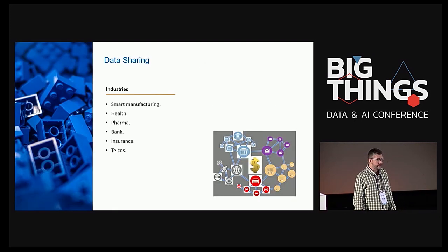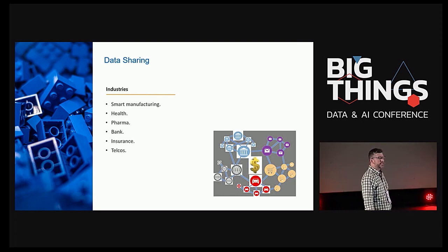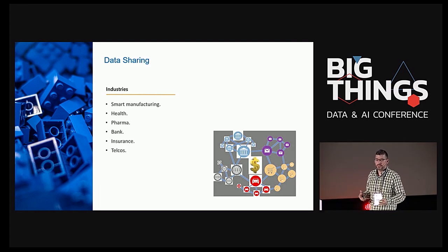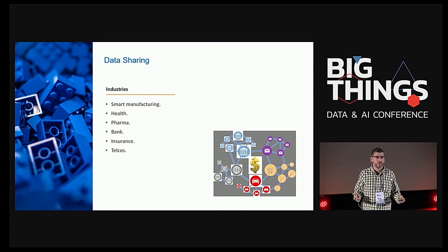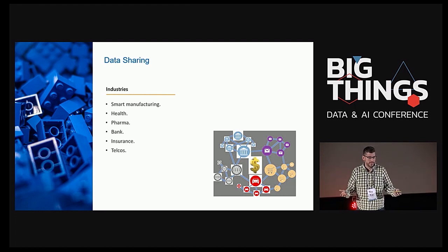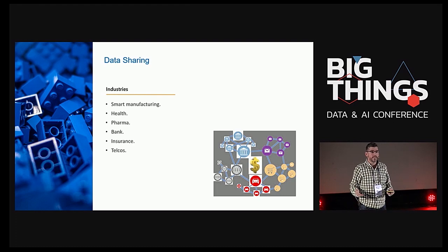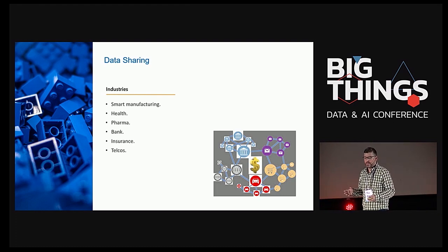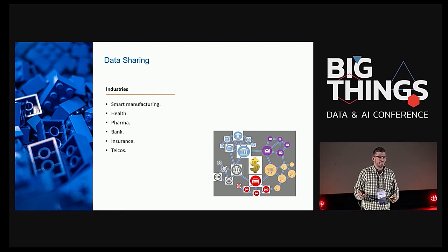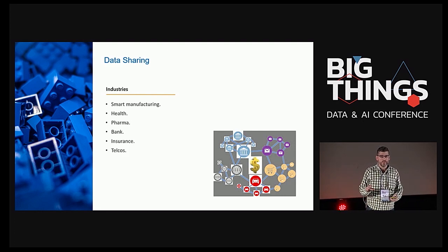This can be applied to many different industries. For example, in the healthcare sector, if we combine the medical records of different hospitals, we can obtain better accuracy in predictive models to detect diseases. Another example is manufacturing: imagine I produce robotic arms and sell them to different manufacturing companies. If I can collect the data from their production, I can train models for predictive maintenance in order to predict in advance when a robotic arm is going to fail.